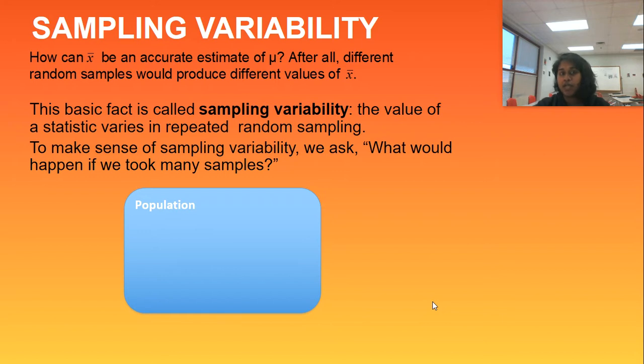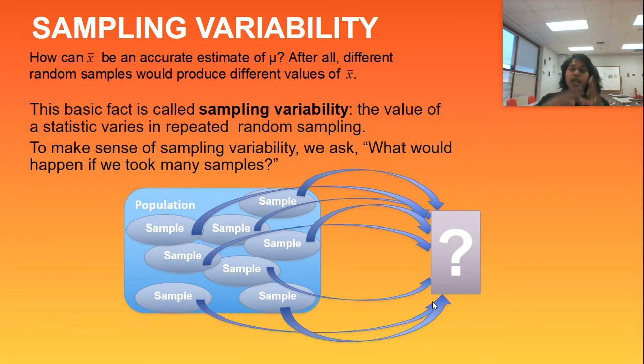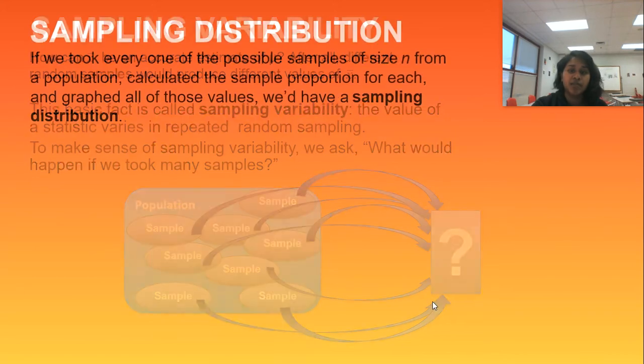Well, this is called sampling variability. This is an important question to ask yourself. It's a great question. But to make sense of it, we would actually ask the question, what would happen if we took many, many, many samples? So let's actually practice one of those. We originally saw this population with a single sample and then getting some information from it. But the reality is when we make an inference back to that population, we probably took numerous samples to make that inference back.